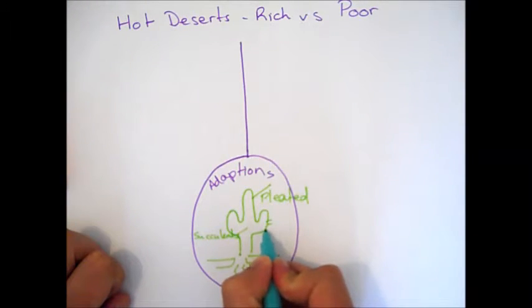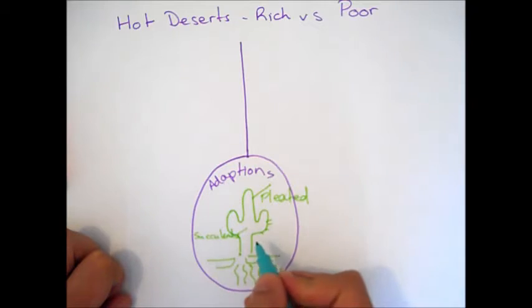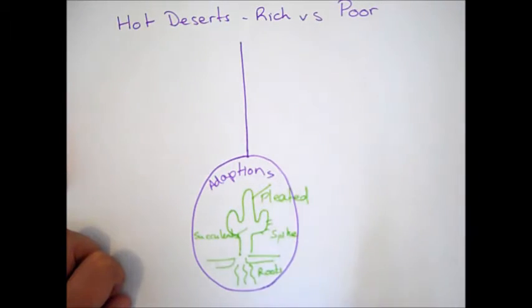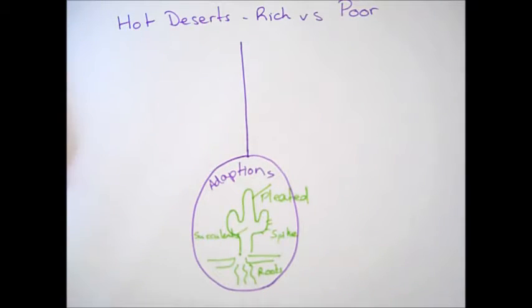We also have, cacti are spiky. These spikes are designed to reduce water loss. They've got less surface area than the leaf. So, not only do they ward off predators or people who want to maybe get access to the water inside the cactus, but they actually reduce water loss. Other trees or other plants in the desert such as the Joshua tree don't have spikes but do have very small leaves to reduce the water loss.